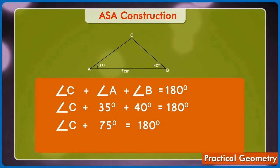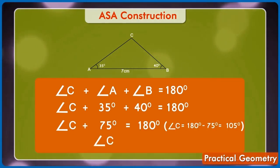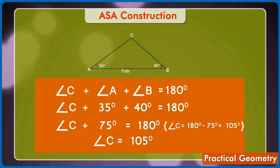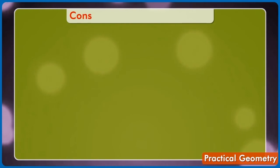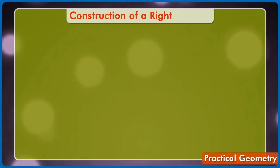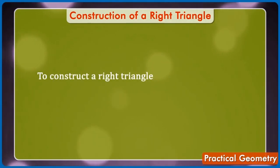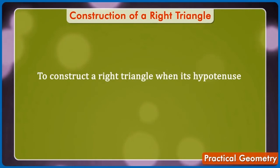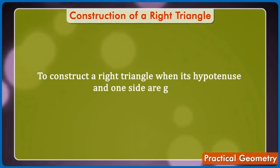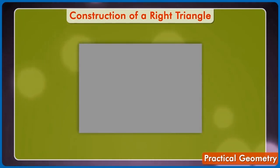The next construction is the construction of a right triangle, or we can say to construct a right triangle when its hypotenuse and one side are given. Let's take an example of this.